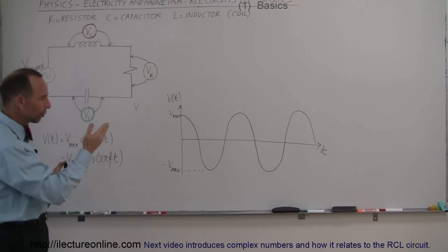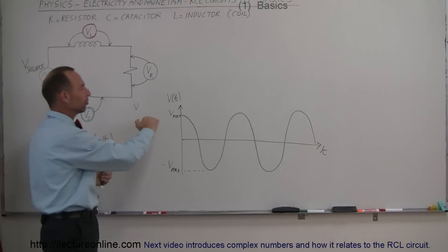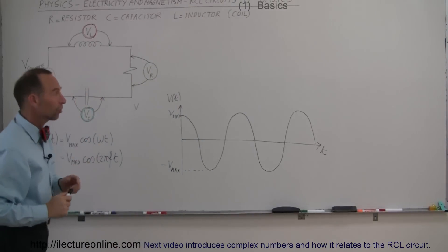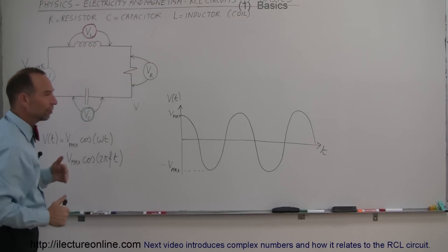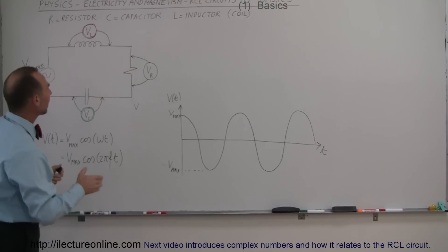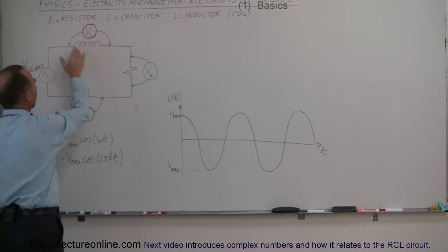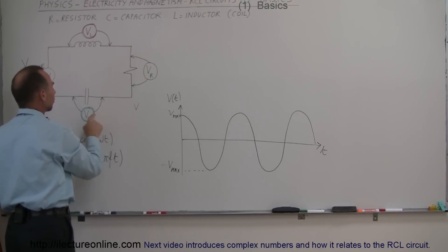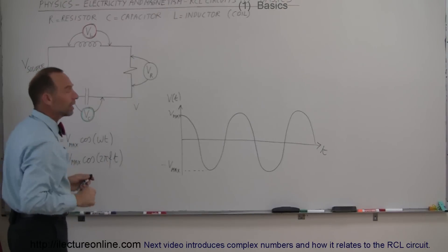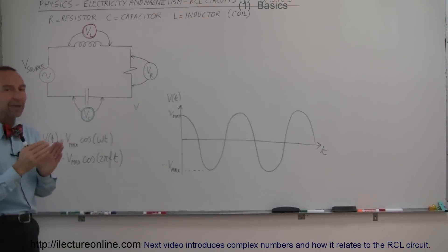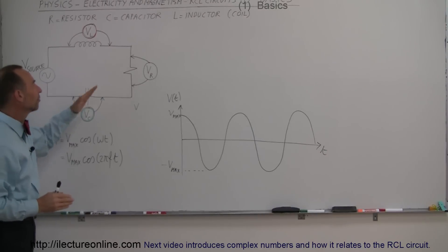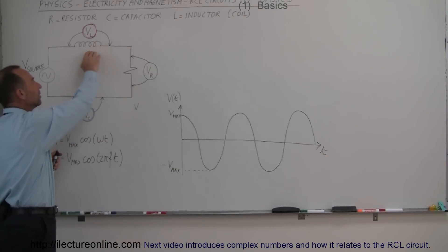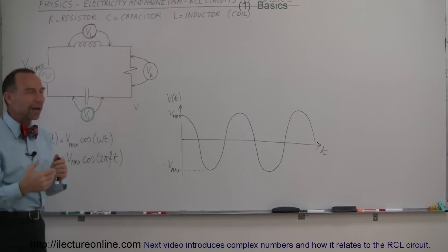AC means alternating current, which means the current goes back and forth — it alternates — so the voltage goes from positive to negative and changes like a sinusoidal wave. In a circuit like that, the inductor and the capacitor have particular behaviors: the voltage across the inductor will increase first, then the voltage will increase across the resistor, and then across the capacitor, and these happen at different times. There's a phase difference between when these events occur, so the current through the circuit is affected by the way the inductor, resistor, and capacitor interact with the voltage source.